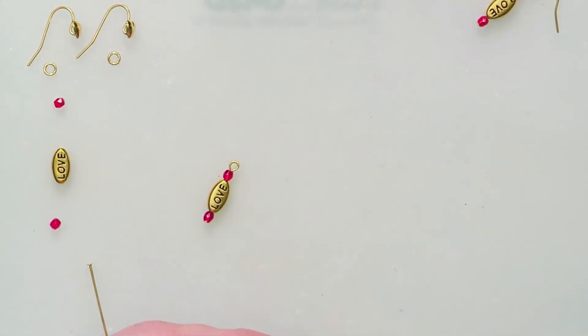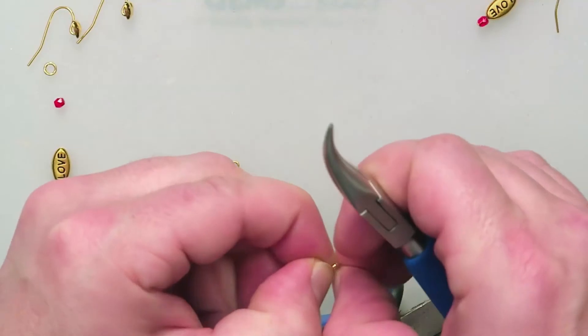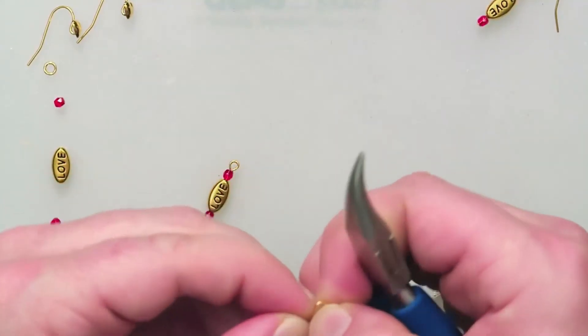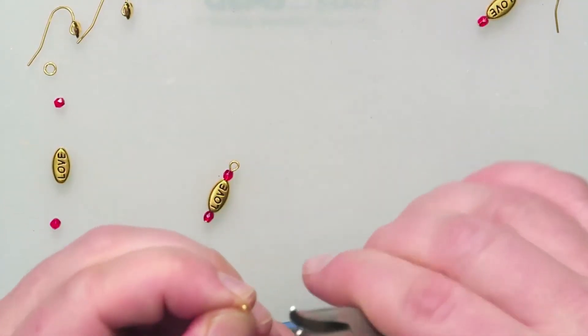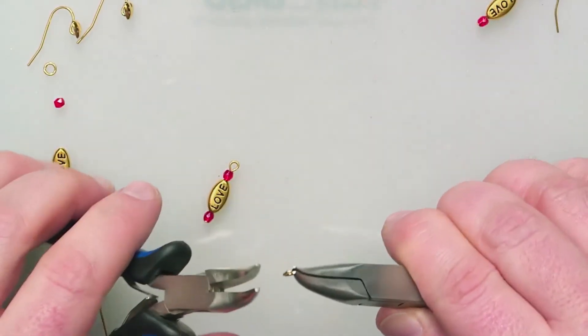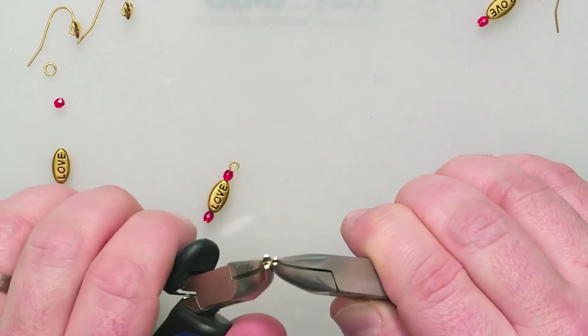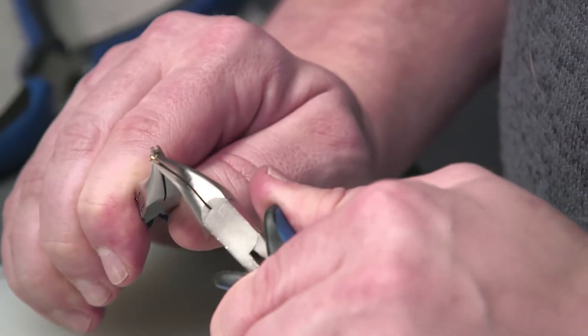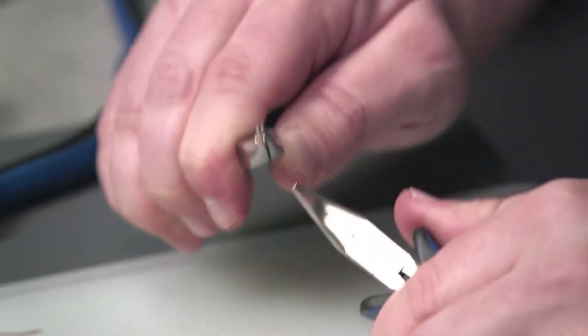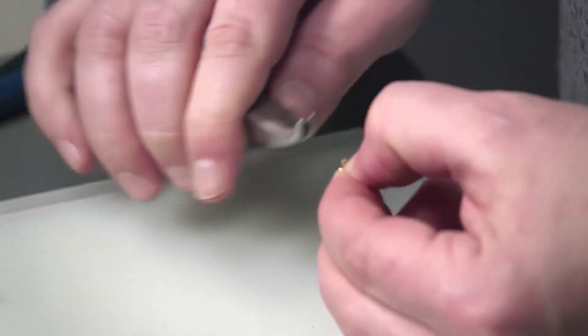I'm going to use my curved nose pliers here, make sure I get the most surface area on my jump ring. Makes it a lot easier to open it up. Let's see, find our opening. And I use my curved nose pliers on both sides. Make sure I'm twisting open the jump ring, not pulling it apart. This way we maintain our shape and it keeps its strength over time.